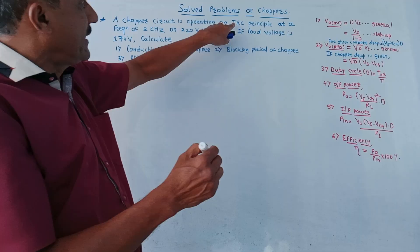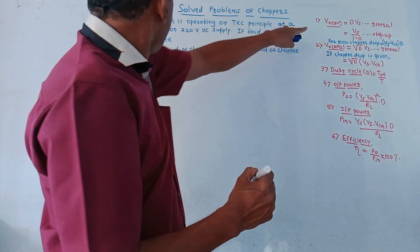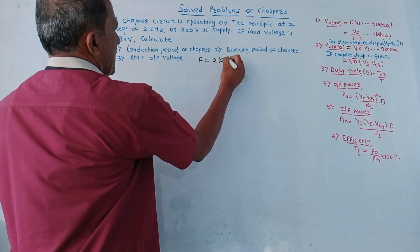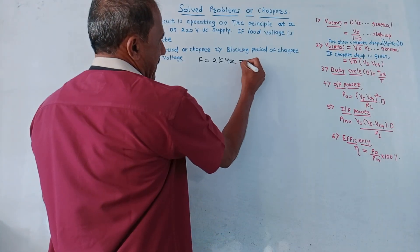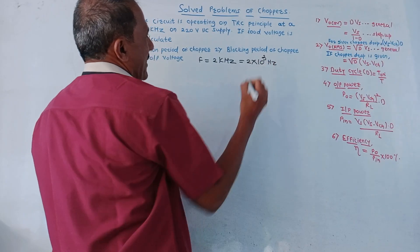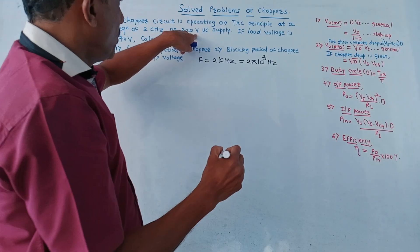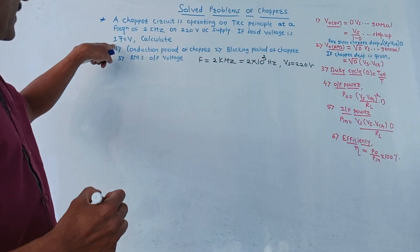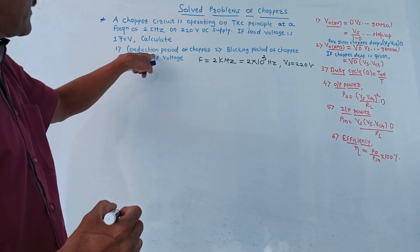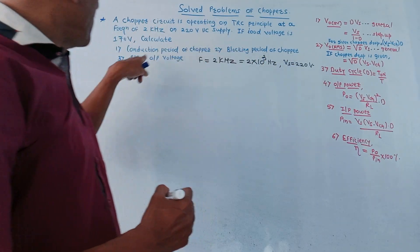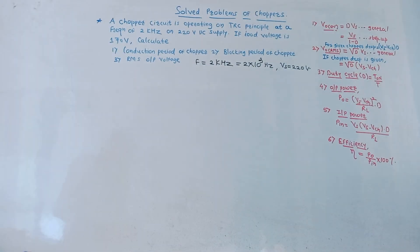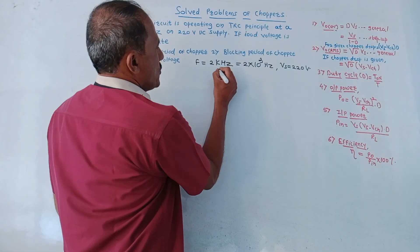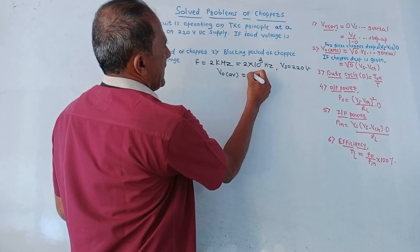Let us discuss the first numerical. A chopper circuit is operating on TRC principle at a frequency of 2 kilohertz — that is 2 into 10 raise to 3 hertz. Supply voltage Vs is 220 volts. Load voltage is 170 volts, so V0 average is 170 volts. Calculate: first, conduction period; second, blocking period; and third, RMS output voltage of the chopper.